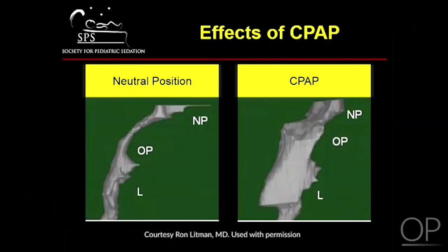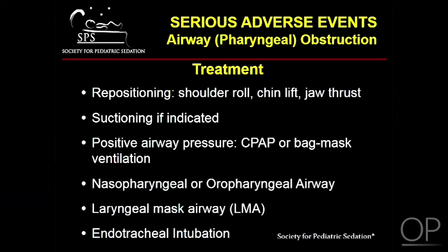Finally, consider these images as an illustration of the effects of positive pressure ventilation on the collapsed airway. Note the degree to which the oropharynx is opened by this treatment modality. This brings us to the treatment strategy for airway obstruction.